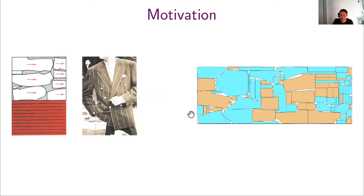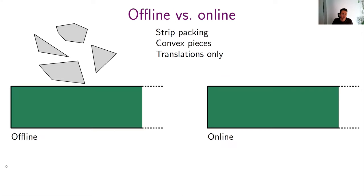Even if we don't have a visible pattern, the fabric has a structure in itself because of the threads, and therefore pieces must have some specific orientation. Here you can see a picture from a company that makes software that can find very efficient packings of pieces, which is used industrially. We were interested in what happens if you get your pieces online, one after the other, so you don't know what you will get in the future. Then how well can you do? We wanted to do this with convex pieces because it was already well studied for axis-parallel rectangles.